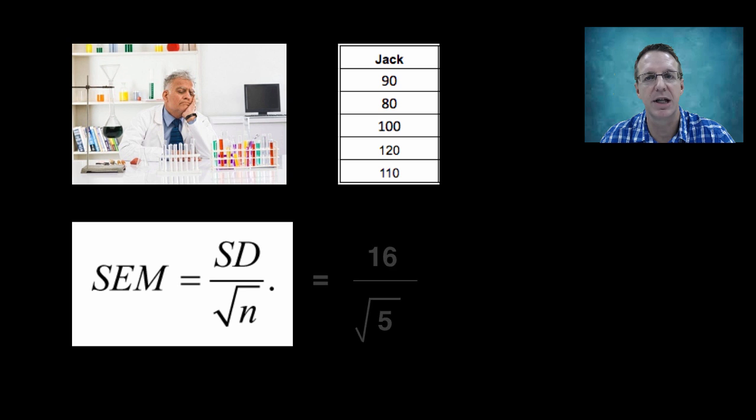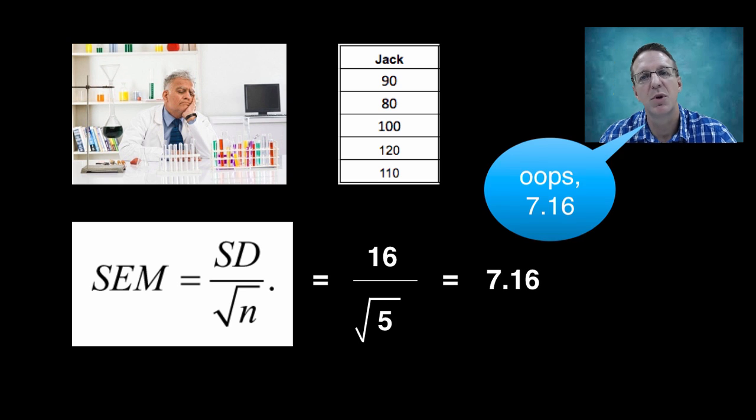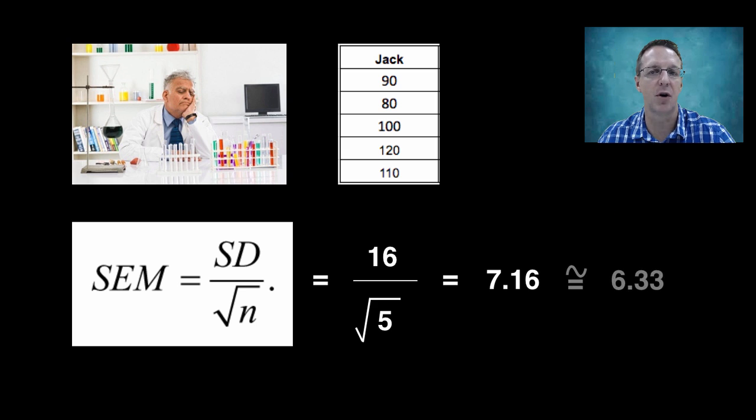And thus, our SEM estimate is 7.15, which actually isn't that shockingly far off from the 6.33 that was calculated using the data from the 12 experiments.